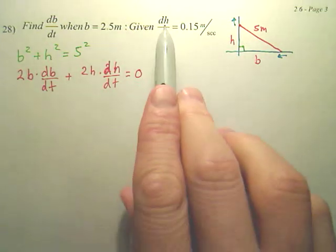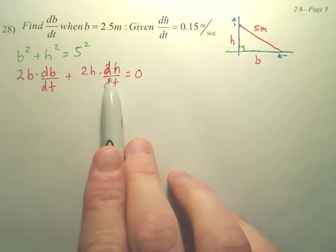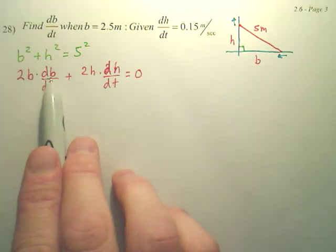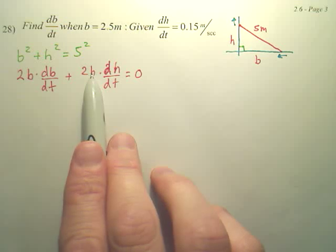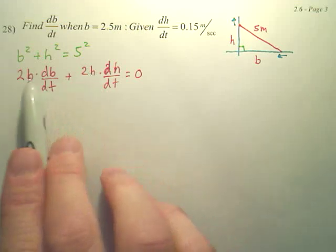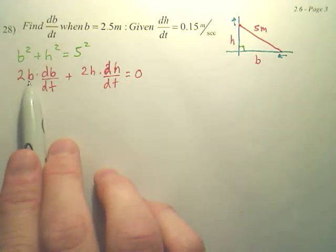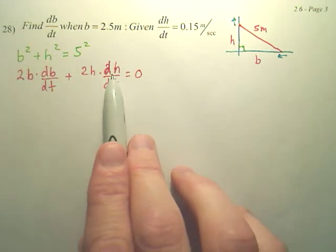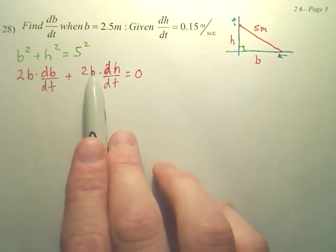So we're looking at this. Do we have dh/dt? Can I plug it in? We want db/dt. Do we have h? Uh-oh. Do we have b? Yes, we have b. We want this. We don't have this, but we do have this. So don't we need h before we go any farther?